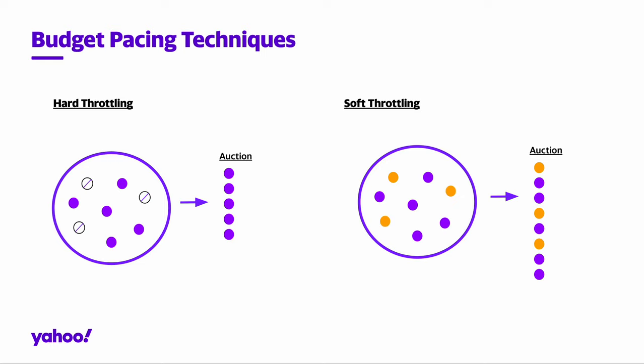The leading paradigm in budget pacing is hard throttling, where ads are randomly prevented from participating in auctions. Another paradigm is soft throttling. Here, all campaigns participate in all eligible auctions. However, their bids may be decreased based on a pacing factor provided by the pacing system in order to pace their spending.